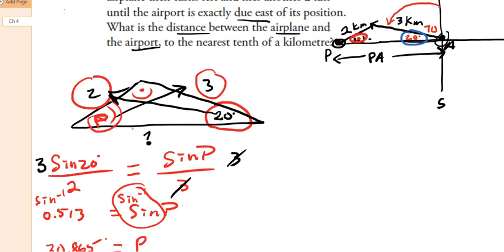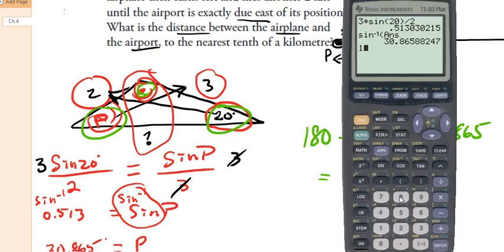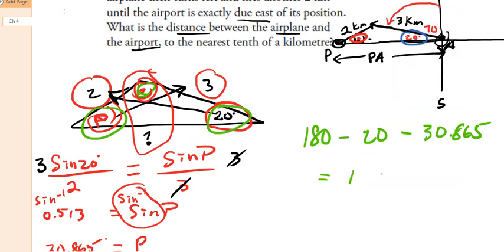Now it would be good to find the third angle so we can use the sine law again. We subtract all known angles from 180: 180 minus 20 minus 30.866 gives us approximately 129.134 degrees.